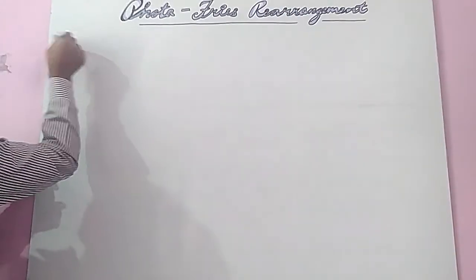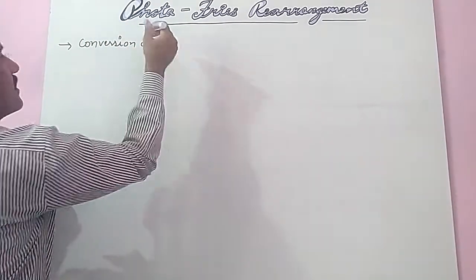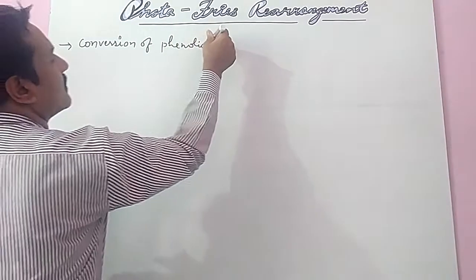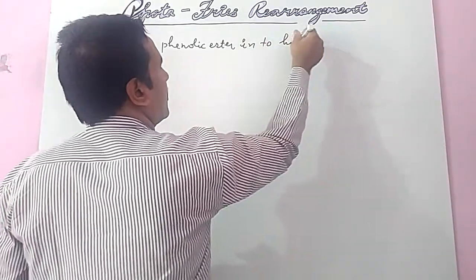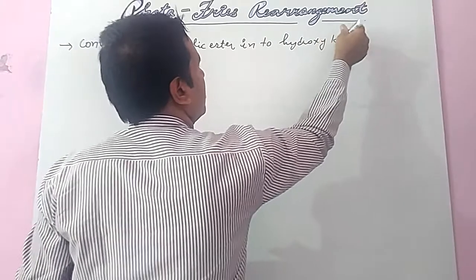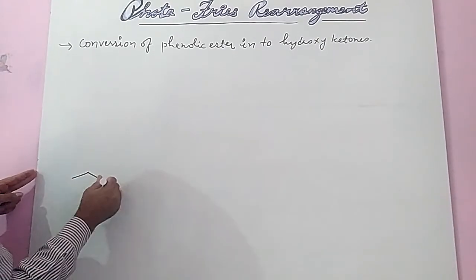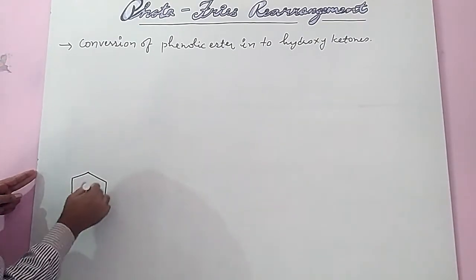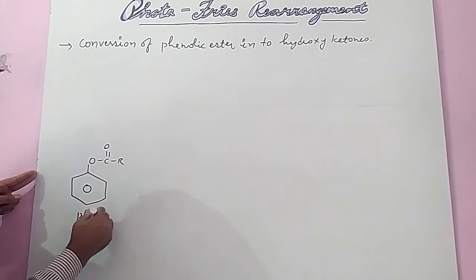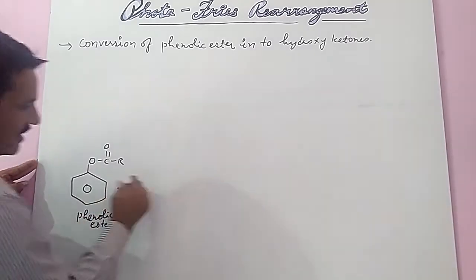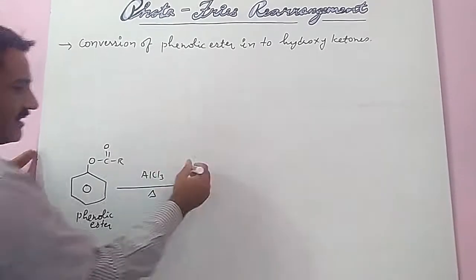In general Fries rearrangement, there is conversion of phenolic ester or aromatic ester into hydroxy ketones in presence of heat and catalyst. So in the general reaction, this is phenolic ester which also has an acyl group. Phenolic ester in presence of catalyst AlCl3 — that is a Lewis acid catalyst — and heat.